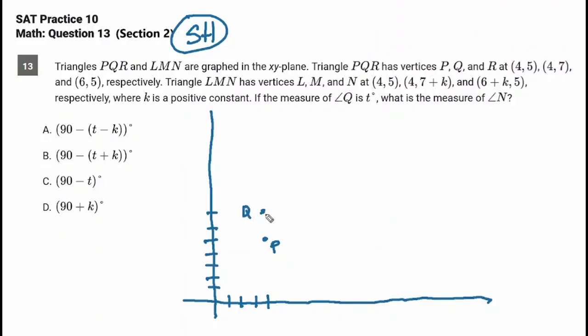And then R is at (6,5). So we're going to go over 2, 5, 6. And it's on the same line here that P is on. So this is R. So let's draw our triangle. And let's note, do we have any kind of triangle that's notable here? We do. This is a right angle.